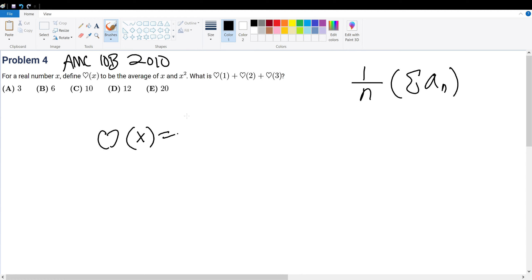From this definition of average, the terms in our example are x and x squared, and we have in total two terms. So this is what the function is describing. We're trying to find the expression heart(1) plus heart(2) plus heart(3).